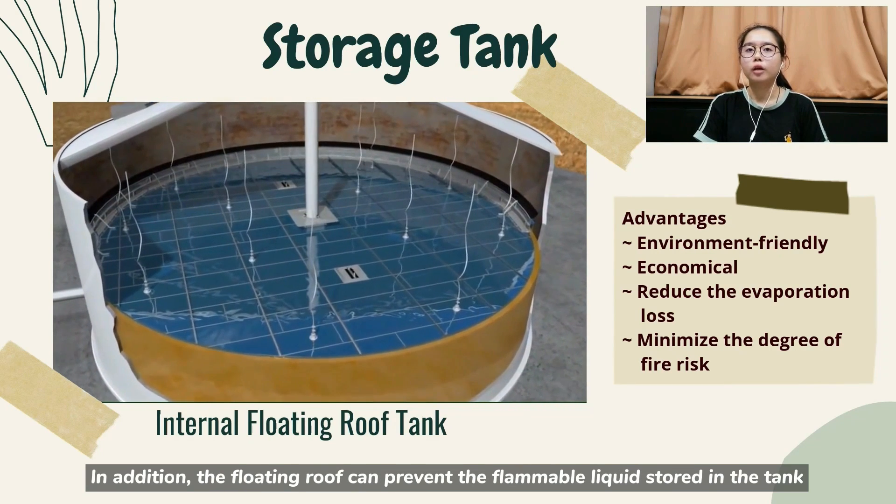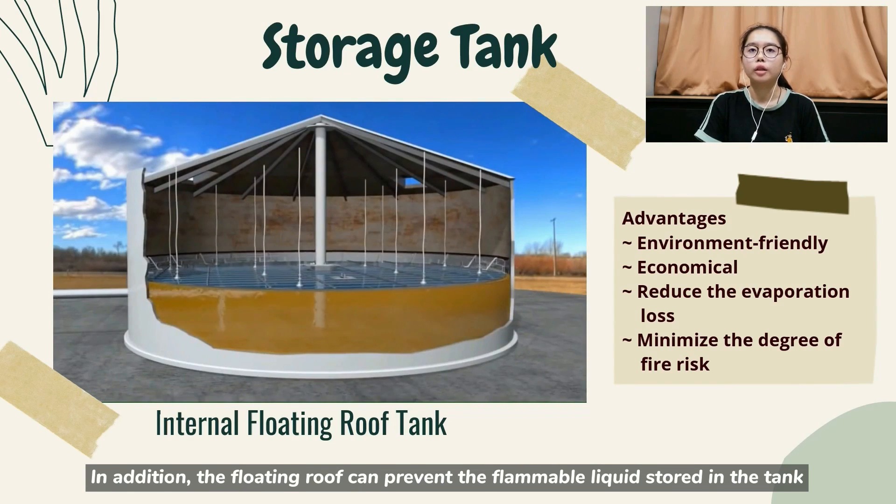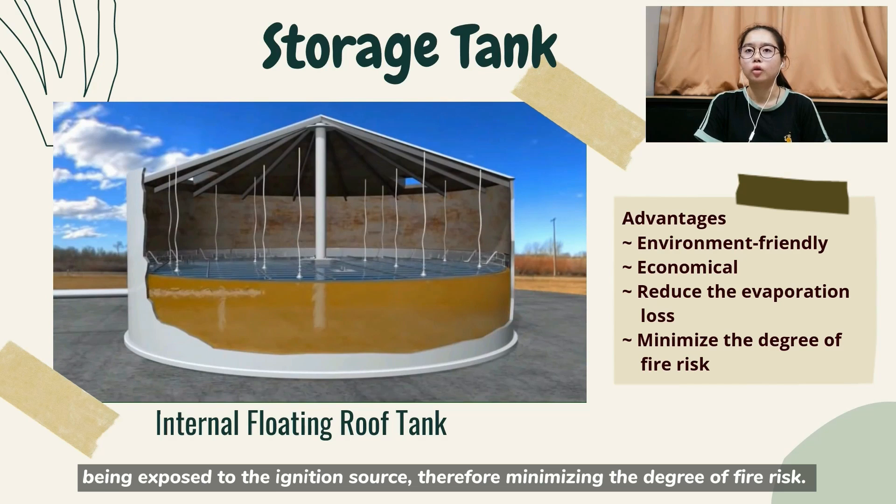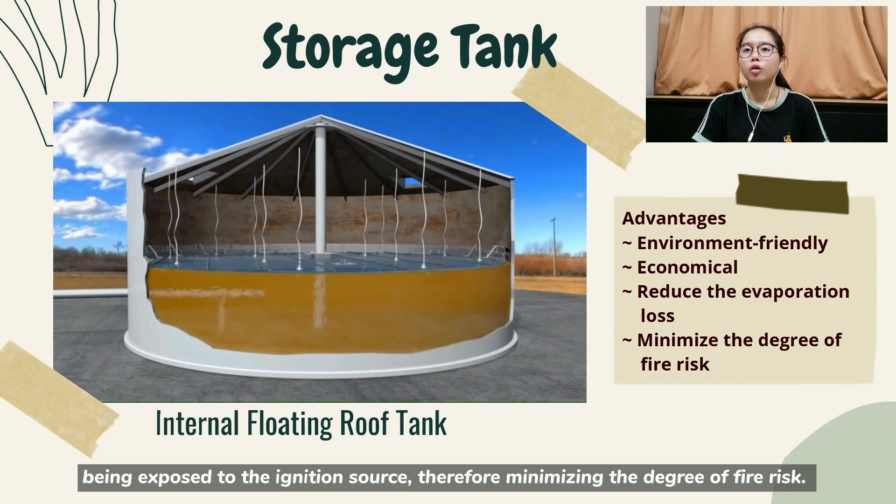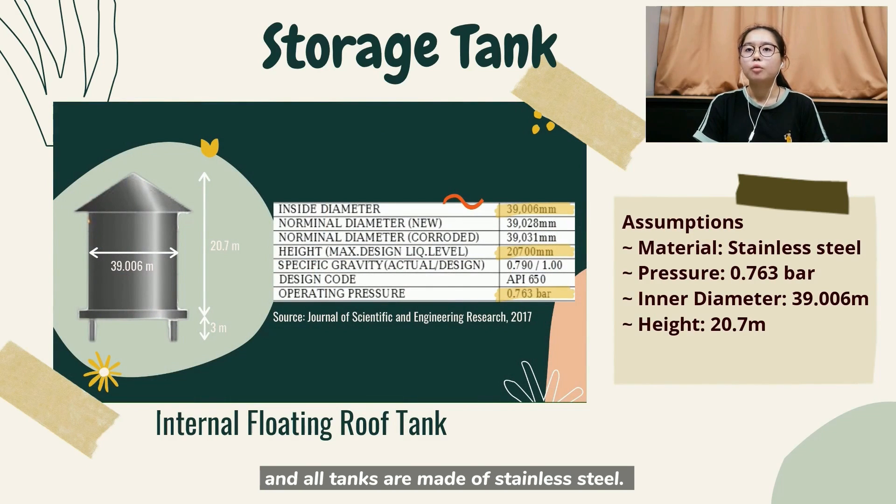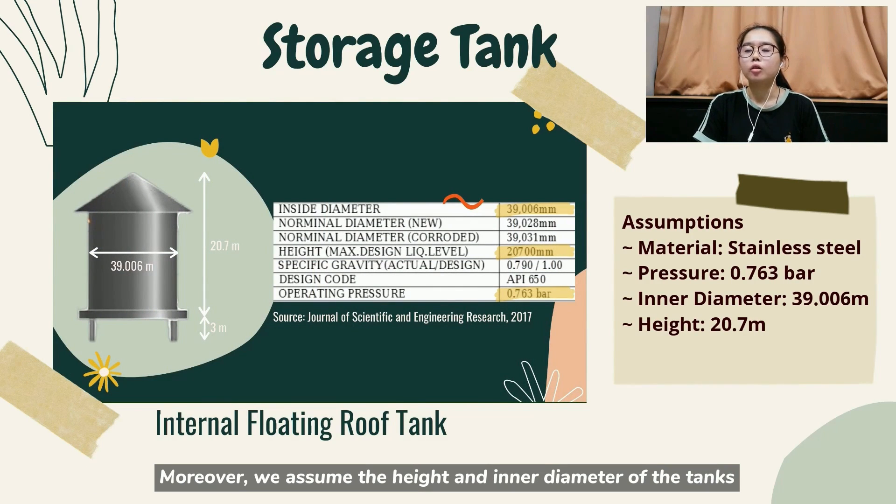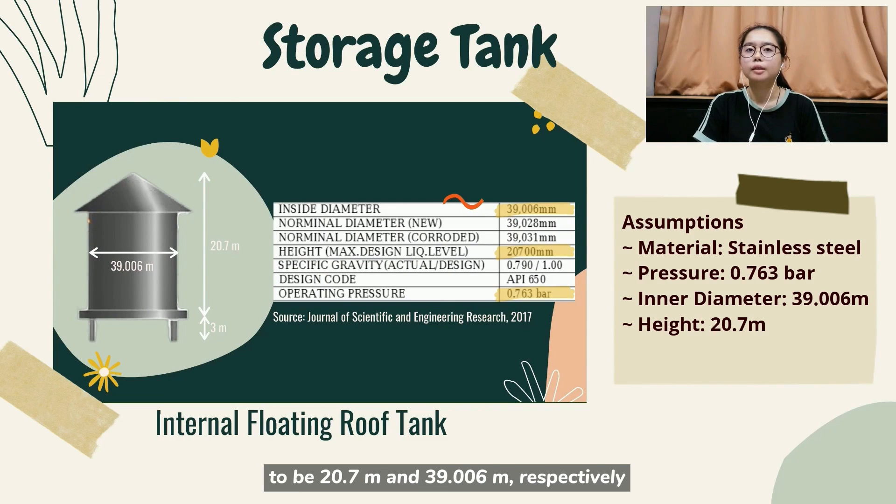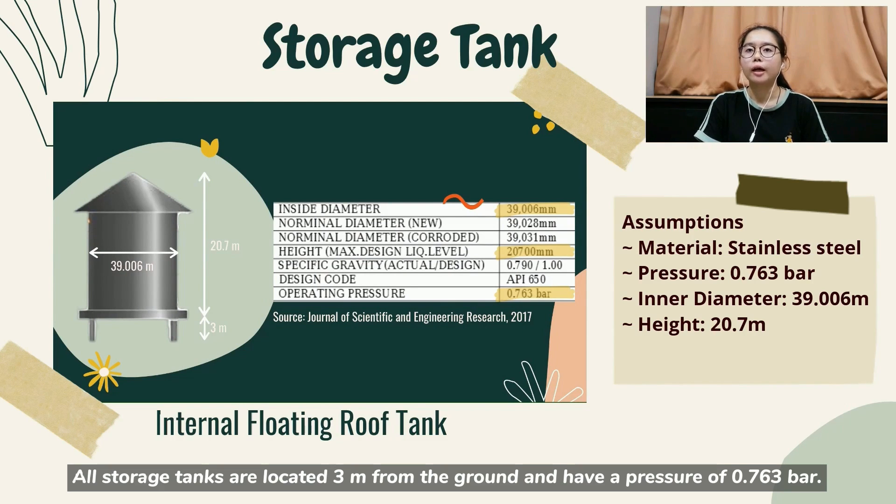In addition, the floating roof can prevent the flammable liquid stored in the tank being exposed to the ignition source, therefore minimizing the degree of fire risk. For the assumptions of storage tank, we have 3 tanks in total in our design and all tanks are made of standard steel. Moreover, we assume the height and inner diameter of the tank to be 20.7 meters and 39 meters and 0.6 meters respectively. All storage tanks are raised 3 meters from the ground and have a total of 0.763 bar.